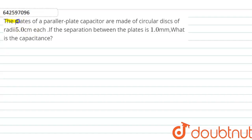Students, the question is: the plates of a parallel plate capacitor are made of circular disks of radius 5 cm each. If the separation between the plates is 1 mm, what is the capacitance?